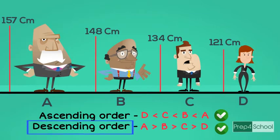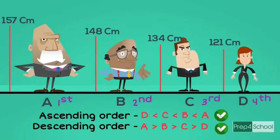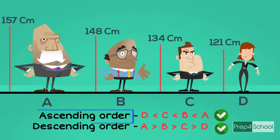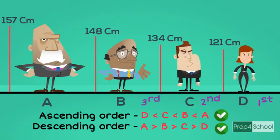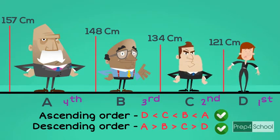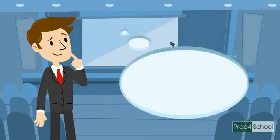In descending order, A is first, B is second, C is third, and D is fourth. In ascending order, D is first, C is second, B is third, and A is last. These are the basic concepts you should know before going to the problems. By drawing their relative heights and making an order, you can do any problem with less time.